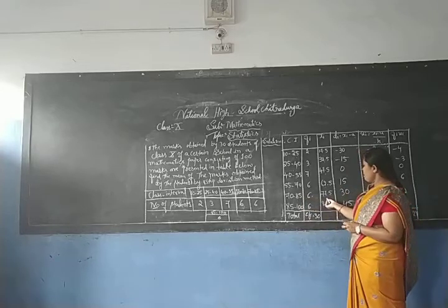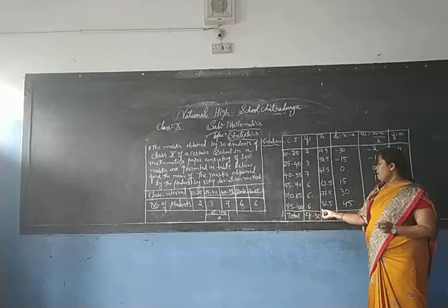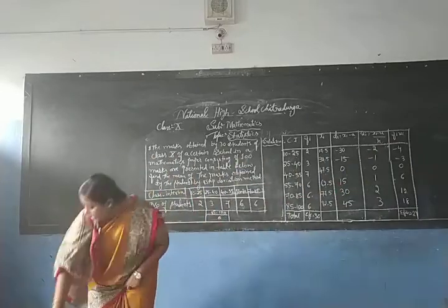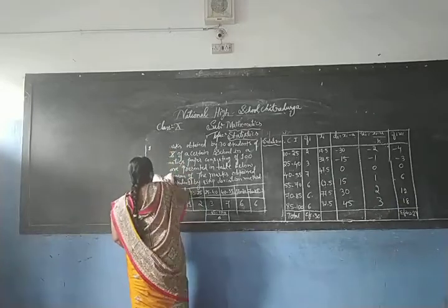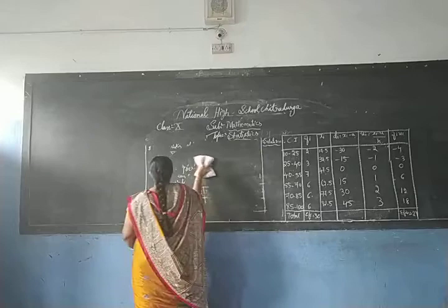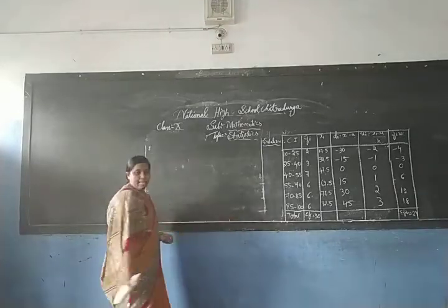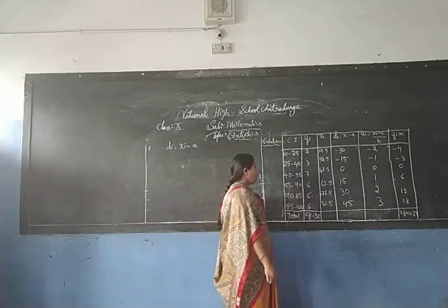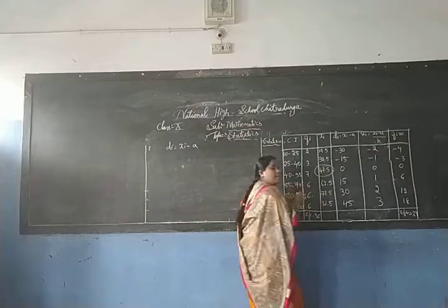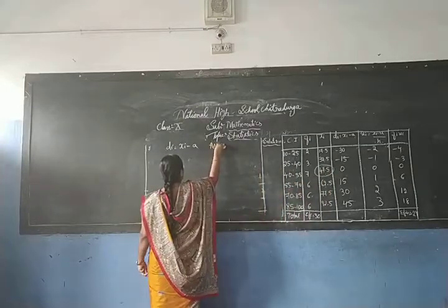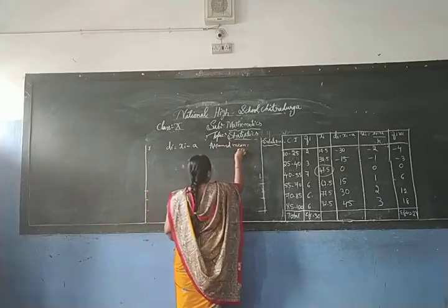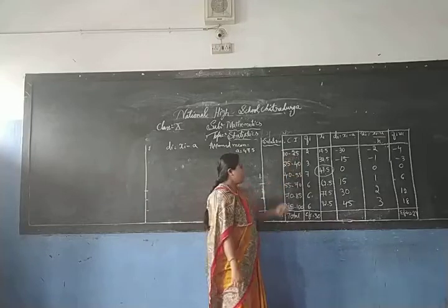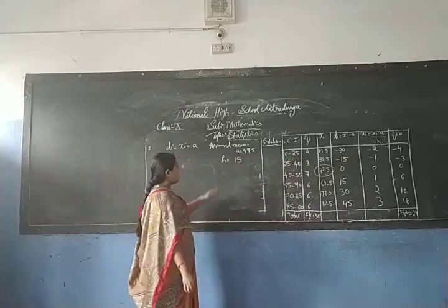Continuing the class marks: (70+85)/2 = 77.5, and (85+100)/2 = 92.5. Now, I am taking the assumed mean as a = 47.5. The size of the class interval is h = 15, since 25 minus 10 equals 15.